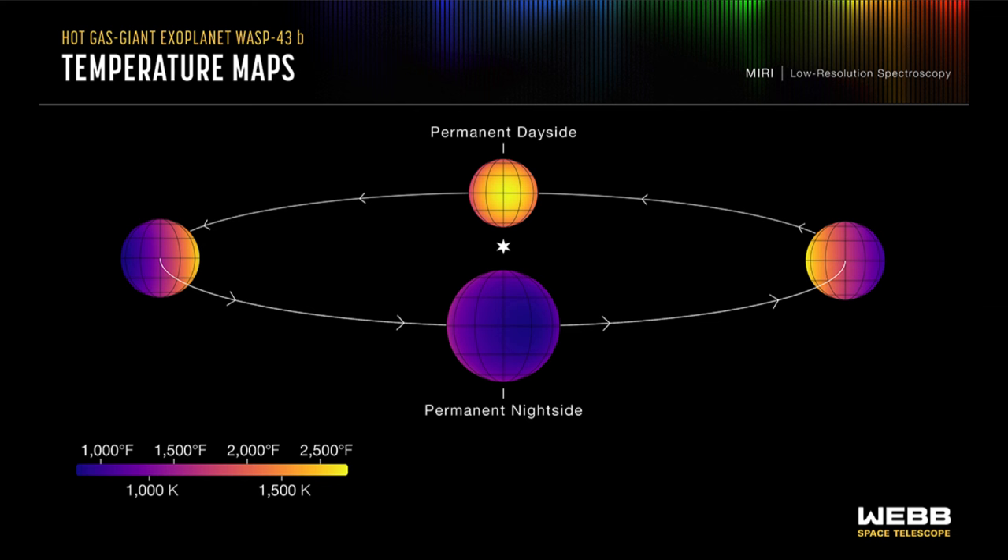However, the nighttime side is still a thousand degrees Fahrenheit, meaning it's still very hot. There is enough heat transport within the atmosphere to keep the night side warm even though it is a permanent night side.